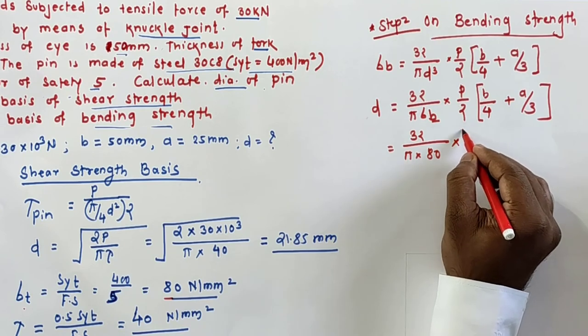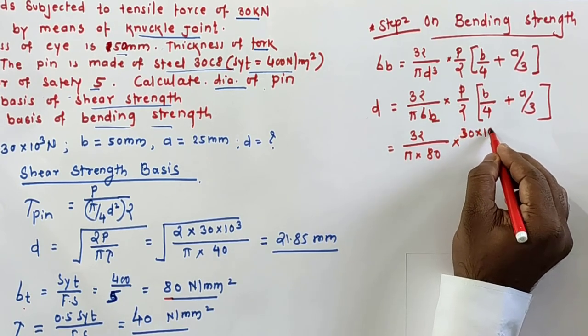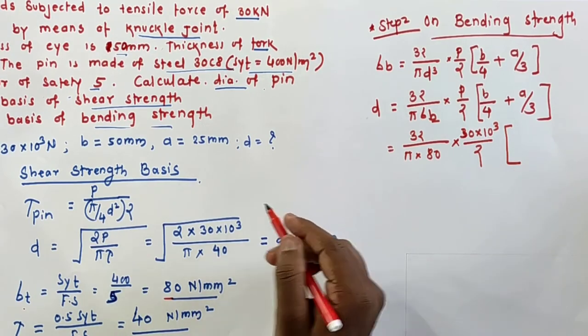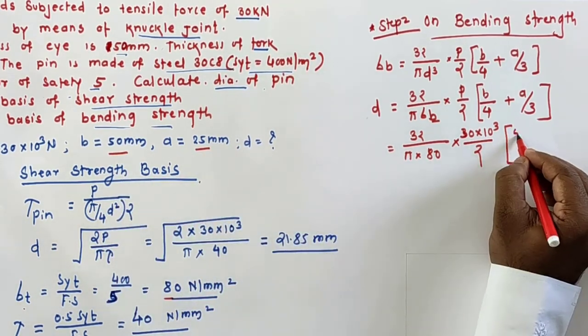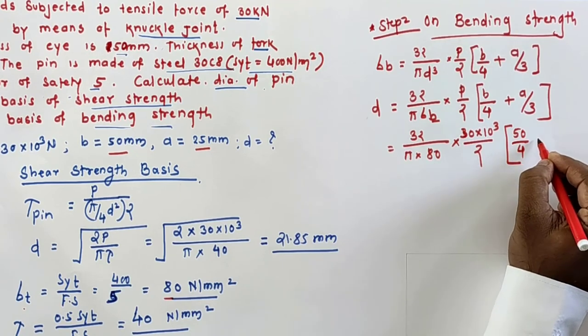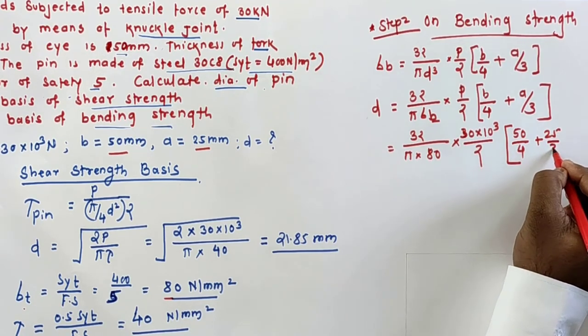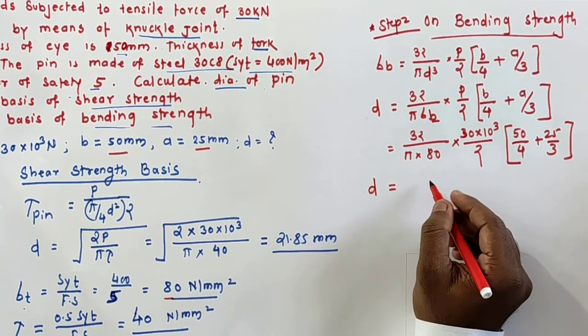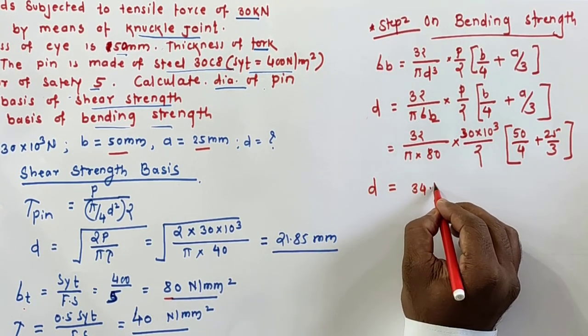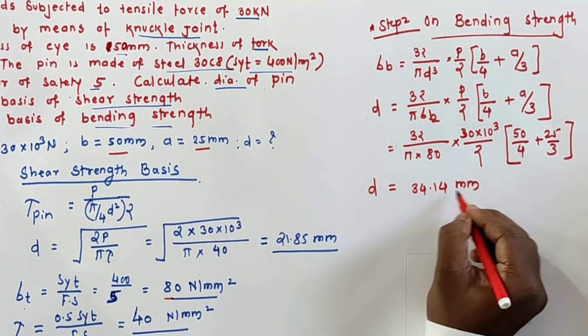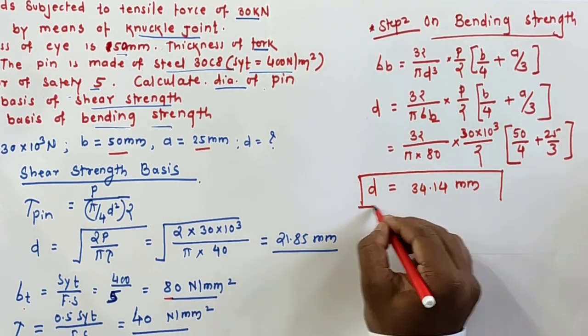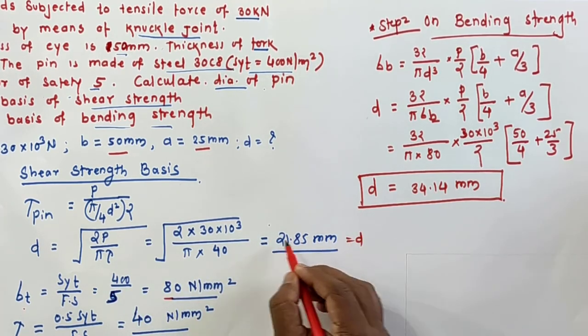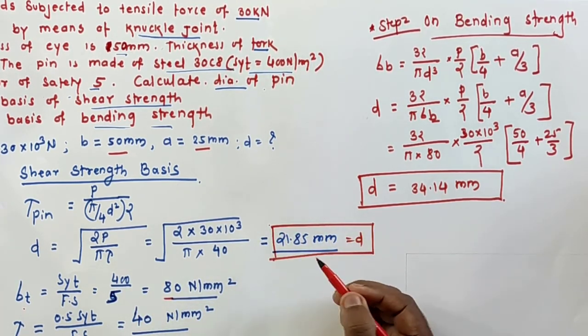Into P by 2, that is 30 into 10 raised to 3 divided by 2, in bracket B is 50, A is 25, so 50 by 4 plus 25 by 3. By putting all the values, I will get the diameter 34.14 mm. So this will be the diameter we will have to get by shear as well as bending.